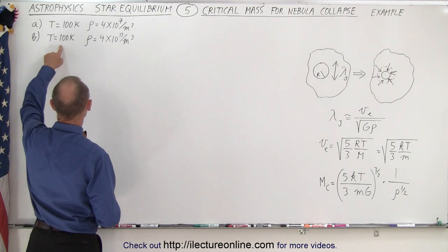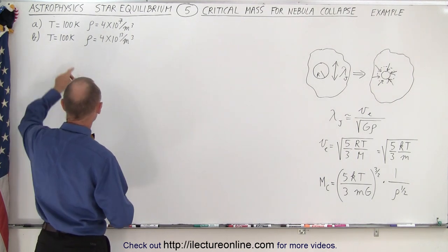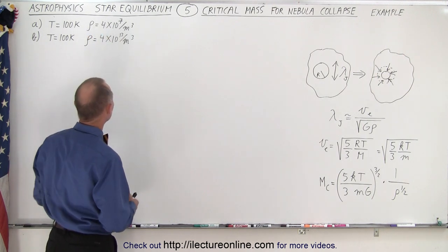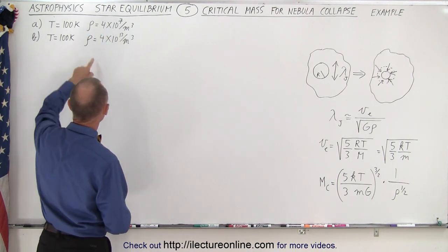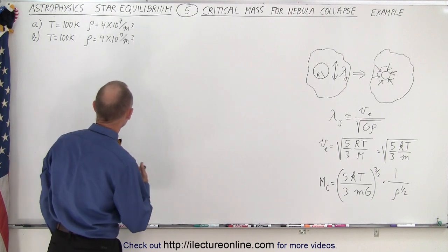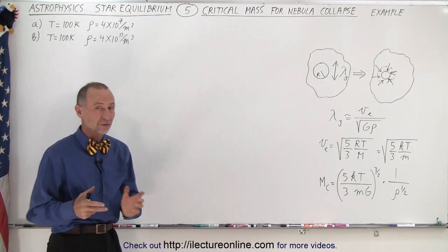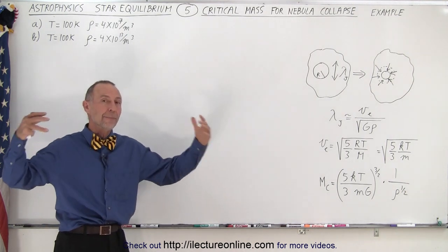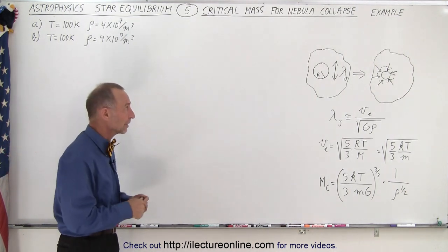In either case the temperature will be 100 Kelvin, that's rather cool, but here we have a small density of 4 times 10 to the 7 molecules per cubic meter and here we'll take a density of 4 times 10 to the 13th per cubic meter. You see with a much greater density you don't need as much mass to cause gravitational collapse.